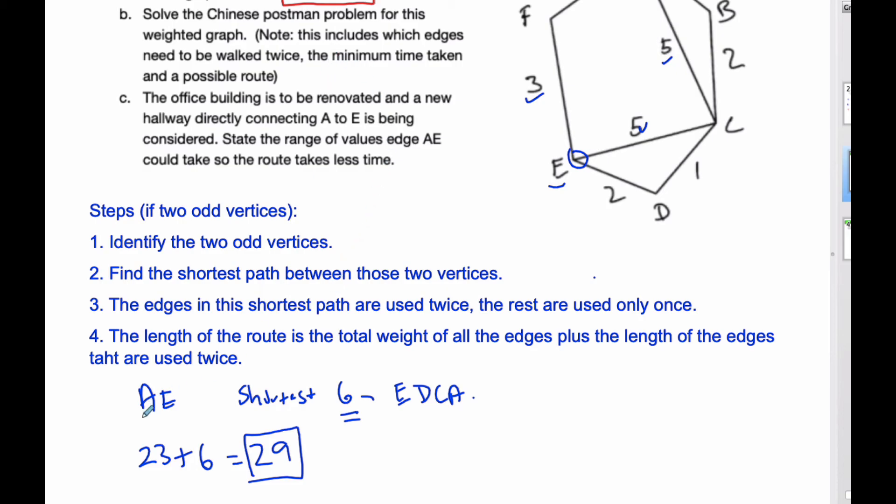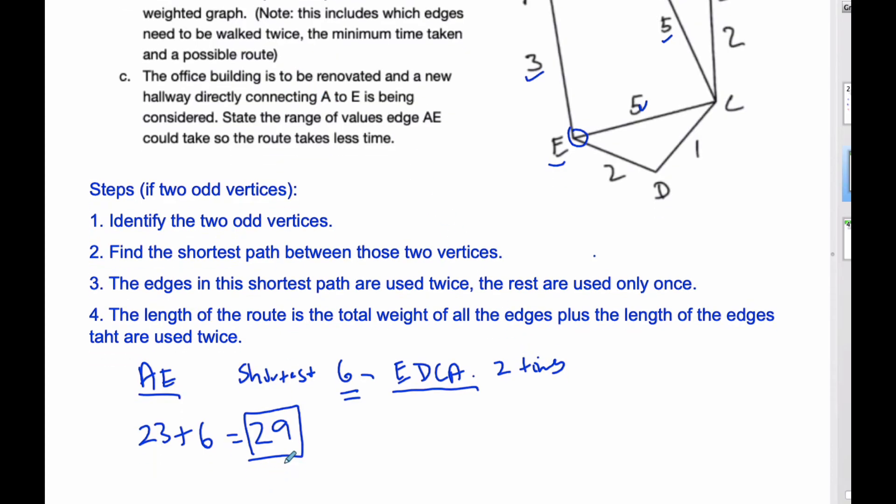We know we're going to do AE or the extra vertices. We're going to do E to D to C to A. We're going to do this two times and our total time taken is 29.